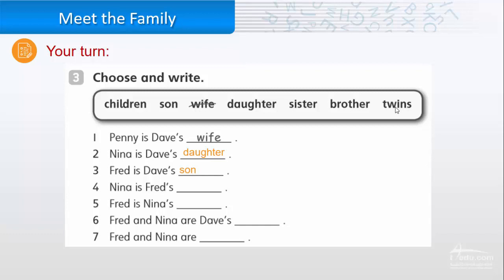Four, Nina is Fred's sister. Five, Fred is Nina's brother. Six, Fred and Nina are Dave's children. Seven, Fred and Nina are twins.